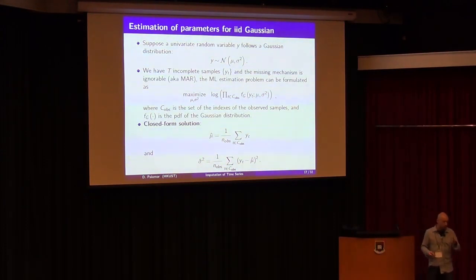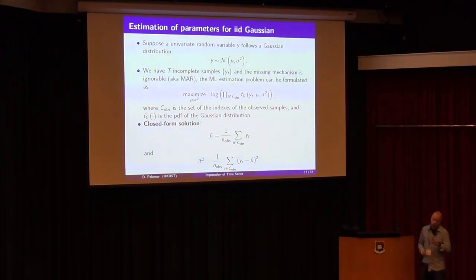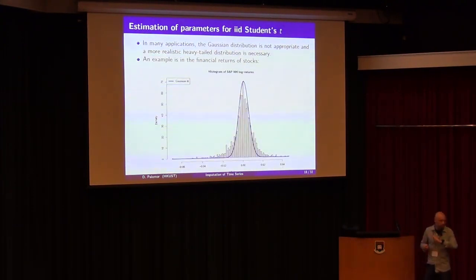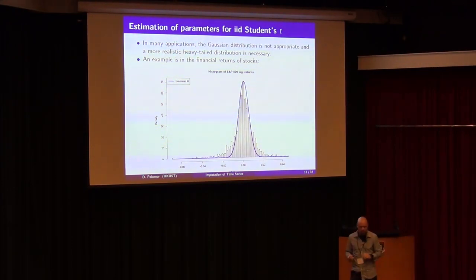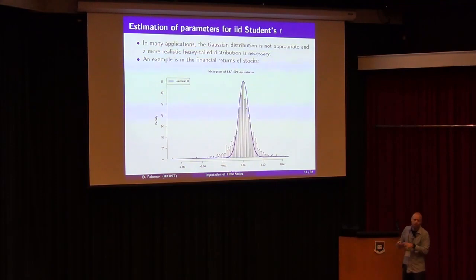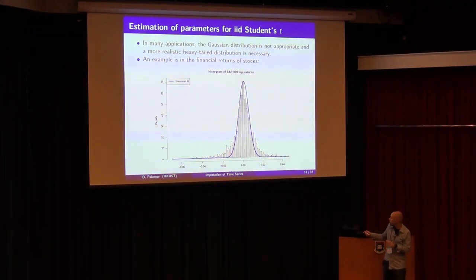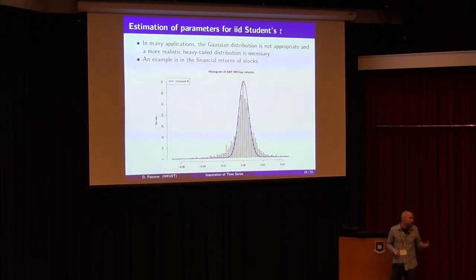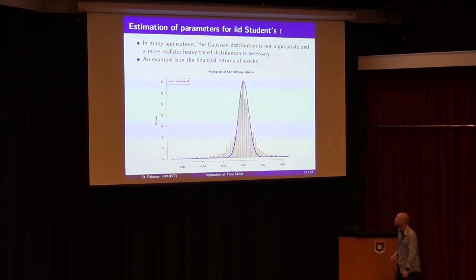As I said before, in many applications — especially in finance — the Gaussian distribution is not satisfied. We are going to assume a heavy-tail distribution. In finance, for example, if you take some stock prices, compute the returns, and plot the histogram, fitting a Gaussian does not work at all. The Gaussian tails quickly go to zero, but the real distribution has heavy tails — they decay very slowly. That happens in many applications in big data as well.